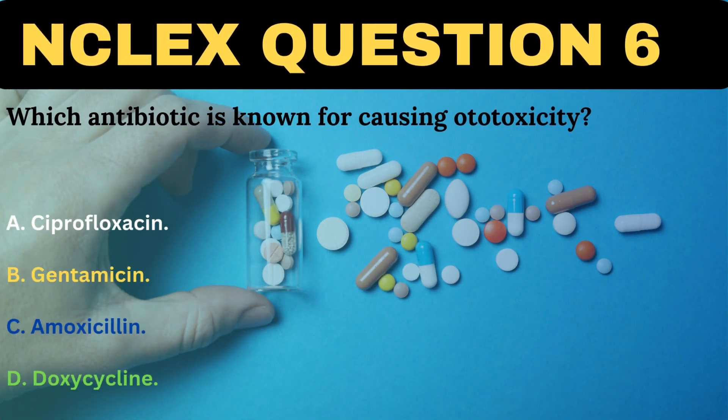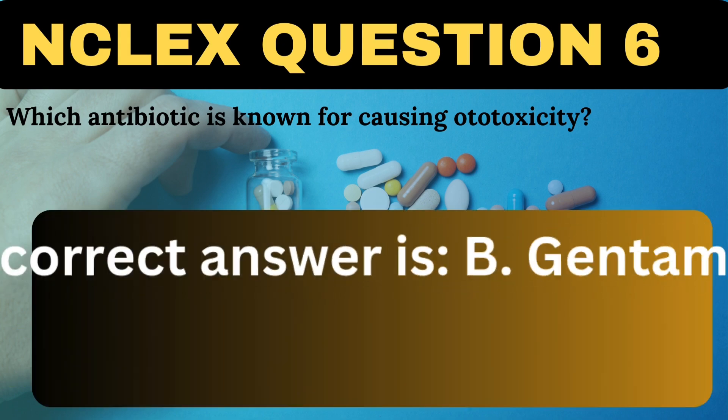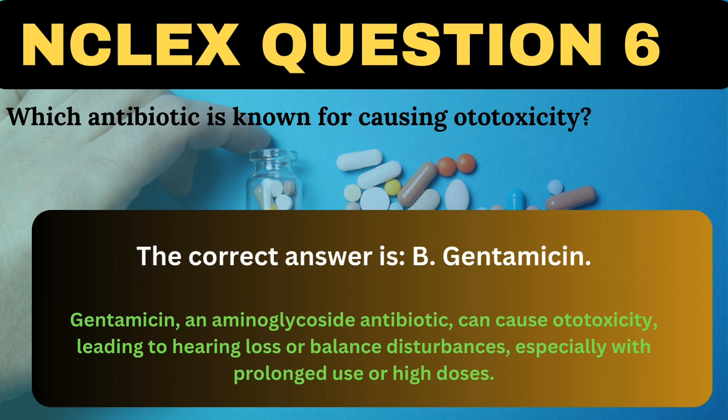Which antibiotic is known for causing ototoxicity? A. Ciprofloxacin. B. Gentamicin. C. Amoxicillin. D. Doxycycline. The correct answer is B, Gentamicin. Gentamicin, an aminoglycoside antibiotic, can cause ototoxicity, leading to hearing loss or balance disturbances, especially with prolonged use or high doses.